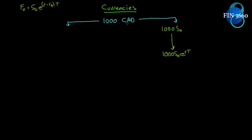So at some point in the future, if I start with a thousand Canadian, I can end up with US dollars in the future. I'll convert at whatever the spot rate is, and whatever US dollars I get will grow at the risk-free rate for that period of time. The other way I can do it is to leave the thousand dollars in Canadian dollars and invest it at RF for that period of time.